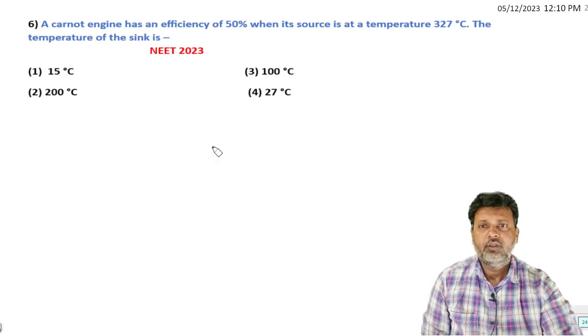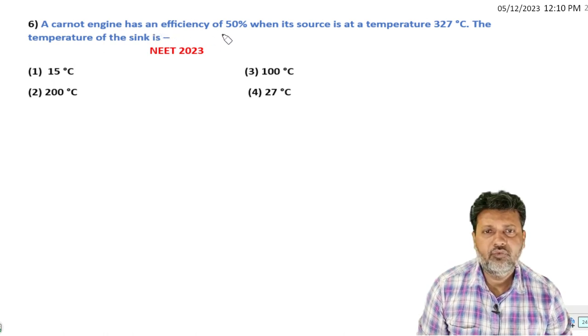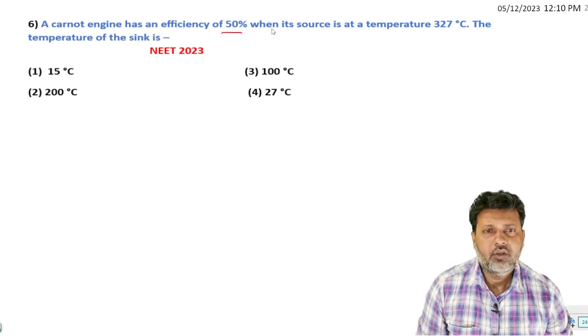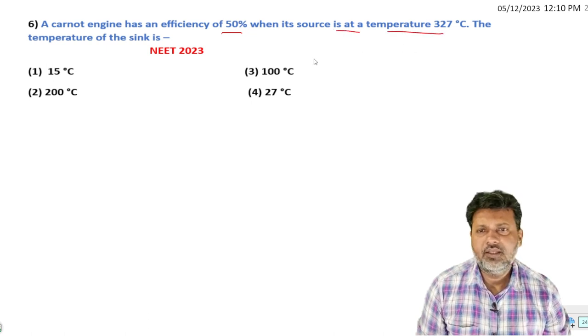Hello, next question. A Carnot engine has an efficiency of 50% when its source is at 327 degrees Celsius. The temperature of the sink is...